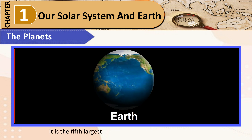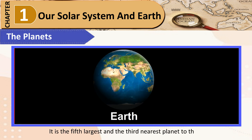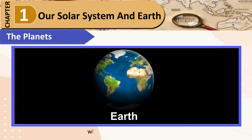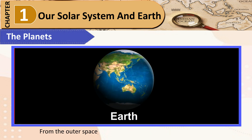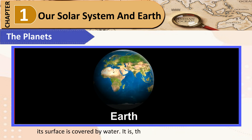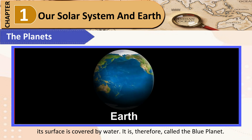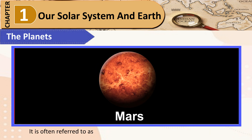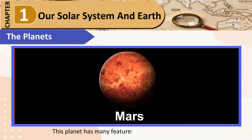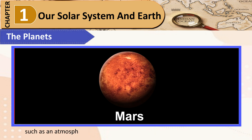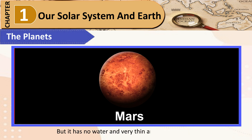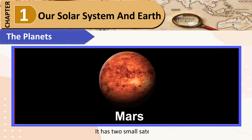The Earth: It is the fifth largest and the third nearest planet to the Sun. It is the only planet that has life-supporting conditions, like water and air, which are essential for survival. From outer space, the Earth appears blue because two-thirds of its surface is covered by water — it is therefore called the blue planet. Mars: It is often referred to as the red planet because of the presence of red soil. Mars has many features in common with the Earth, such as an atmosphere with clouds and polar caps that melt partly in summer, but it has no water and a very thin and dry atmosphere. It has two small satellites.